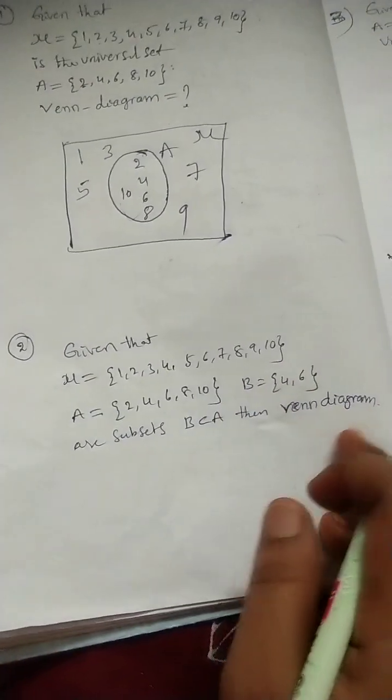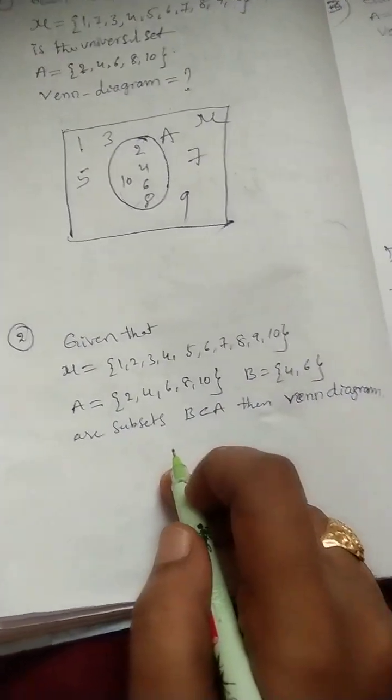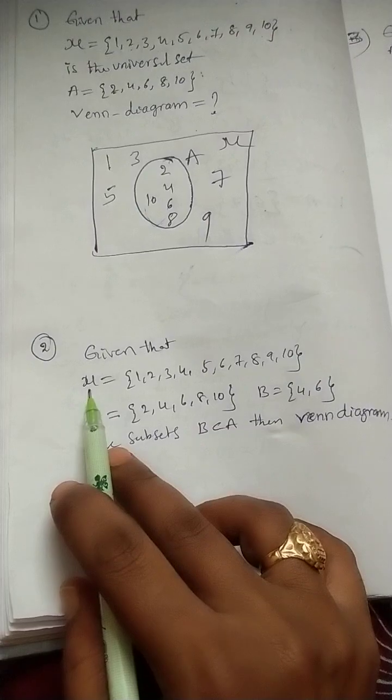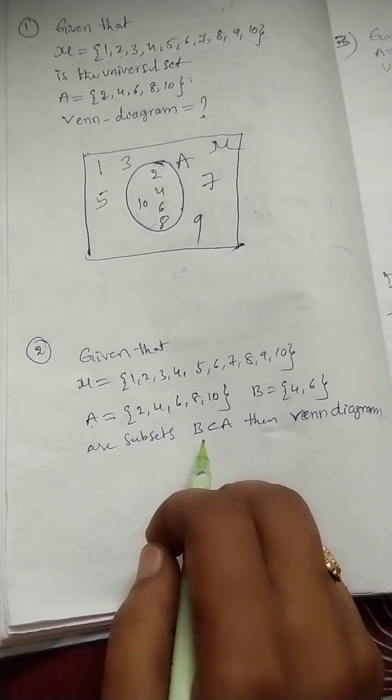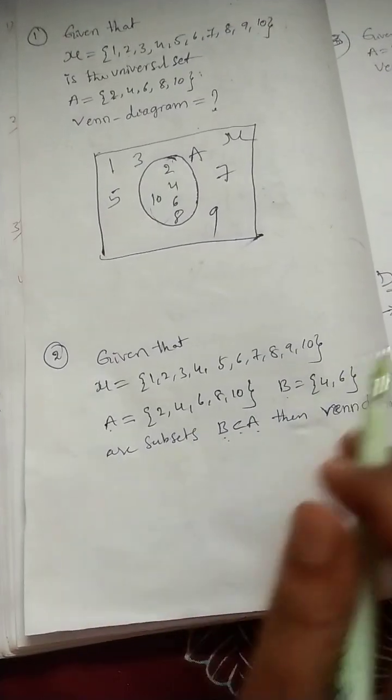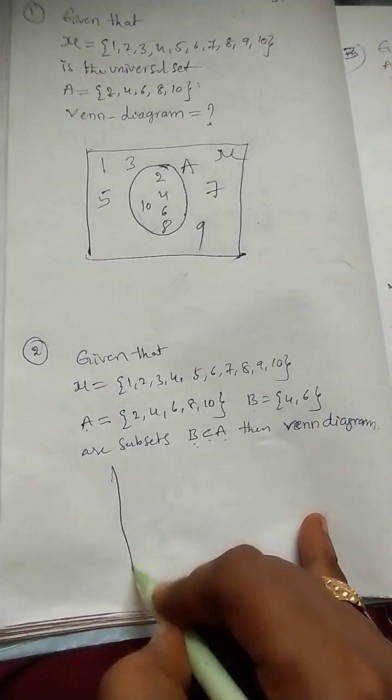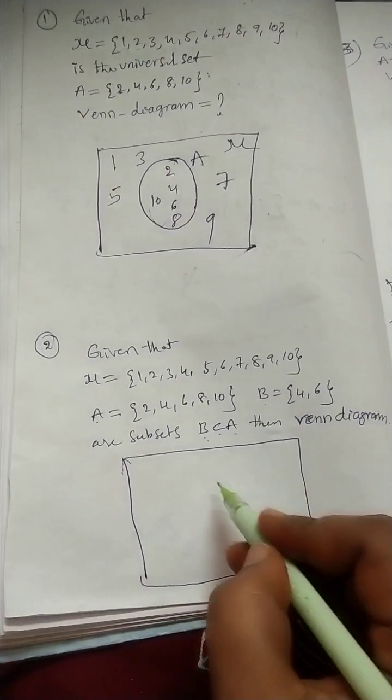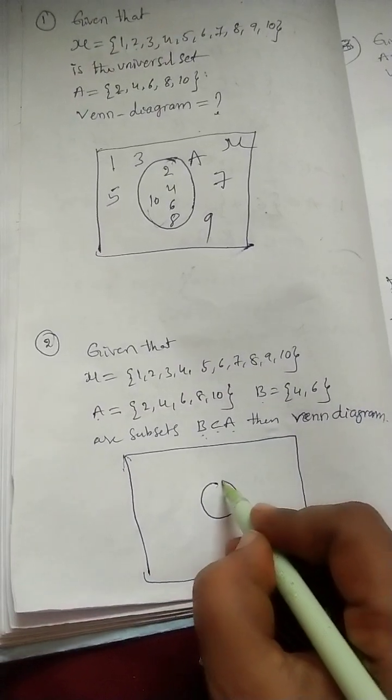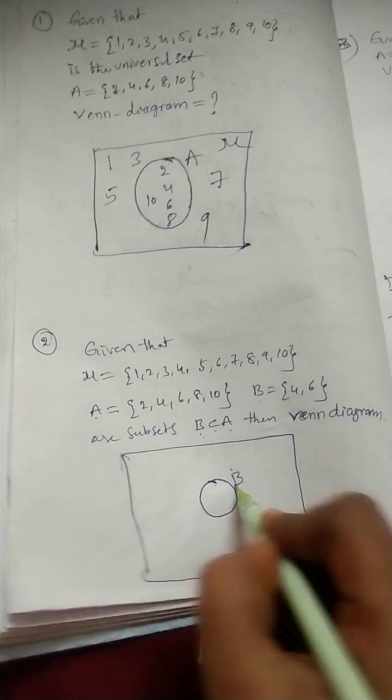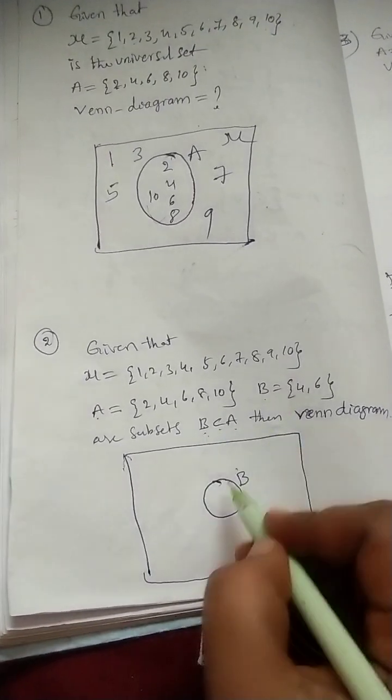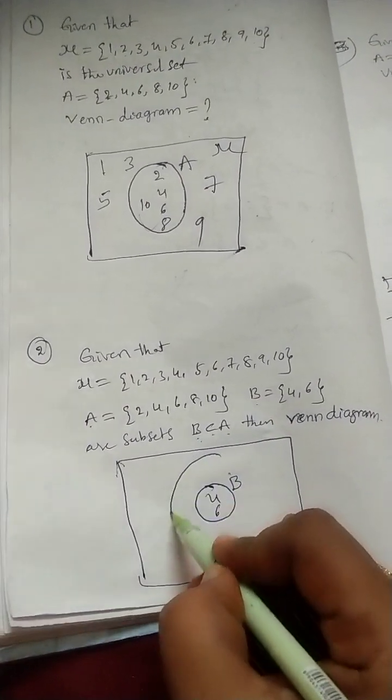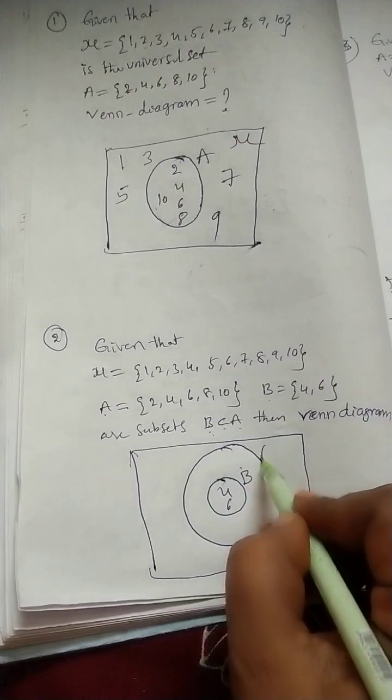Next, see. How to represent Venn diagrams for this? Here, given universal set and set A, set B. And, one hint is given. B is subset of A. So, how to write the Venn diagram for this? Very simple. Here, first, take set B. Why? Because set B is the subset of A.